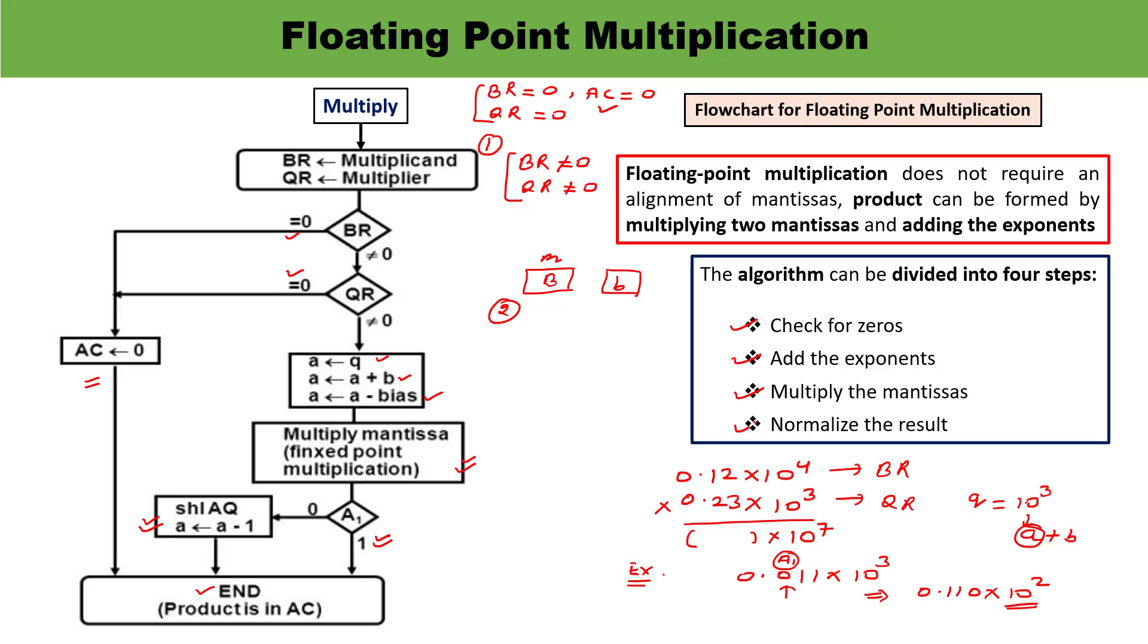So what are the four steps? First, check for zeros. Second, add the exponents. Third, multiply the mantissas. Fourth, normalize the result. Normalizing the result is very important - you must check for overflow carry or underflow condition.